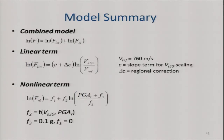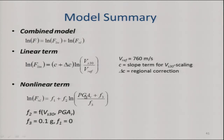The model has a linear term and a nonlinear term. The linear term uses the form log(VS30/Vref) from Roger Borcherdt's original work, with a slope term and a delta C for regional effects. The reference velocity is set to 760. The nonlinear term: F2 is the slope — as PGA goes up, amplification goes down; F3 is an additive parameter so the function saturates at low ground motion levels, set to 0.1; and F1 is set to 0, so for very weak motions there is no nonlinear term.